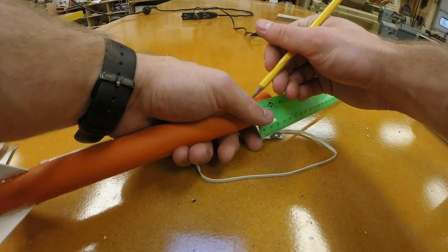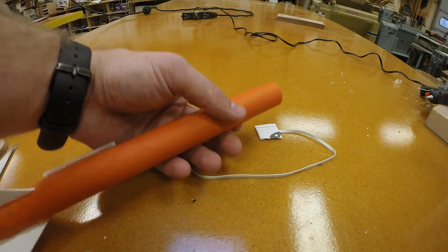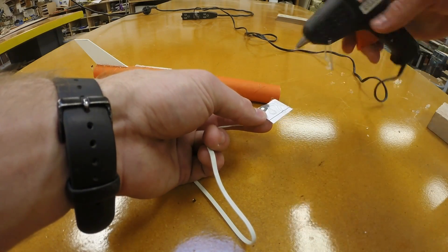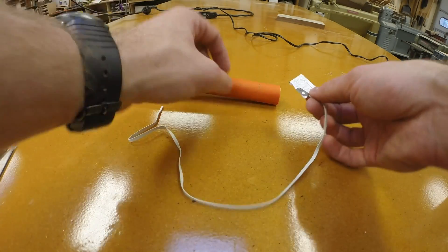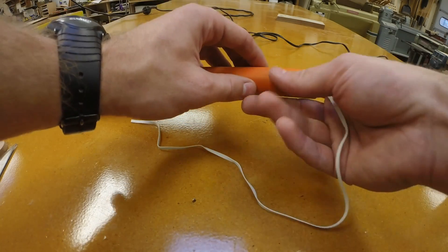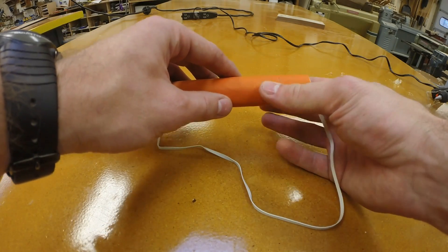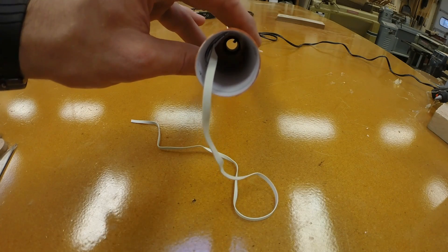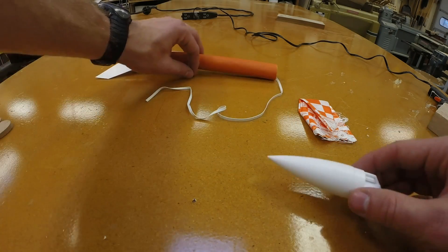From the nose cone end of the rocket, use a ruler and make a mark at one inch. You're going to put a dab of hot glue onto the shock cord mount and you're going to push it down just past that one inch mark and press it against the side of the rocket. It's very important that this shock cord mount does not stick out into the middle of the tube. So look down the tube to make sure it's hugging the walls.